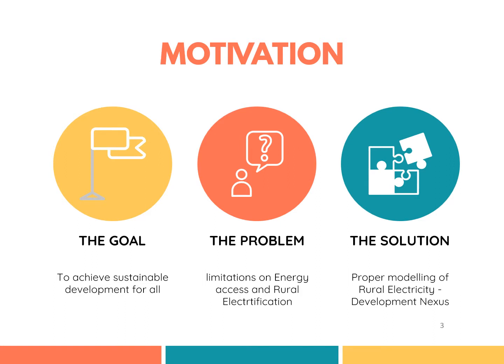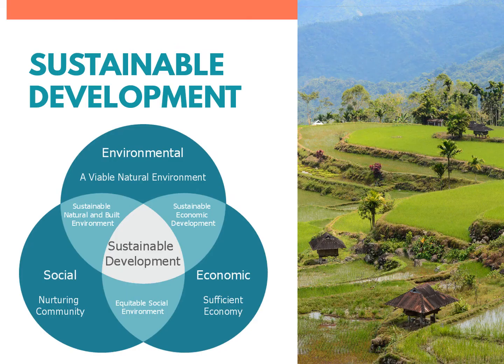The goal of this report is to achieve sustainable development for all by addressing the limitations in energy access, mainly in rural electrification, and this is solved by providing solutions on how we can model the rural electricity development nexus. In achieving sustainable development, Vanek et al. argued that environmental sustainability, economic sustainability, and social sustainability must be achieved, coined as the triple bottom line of sustainable development.